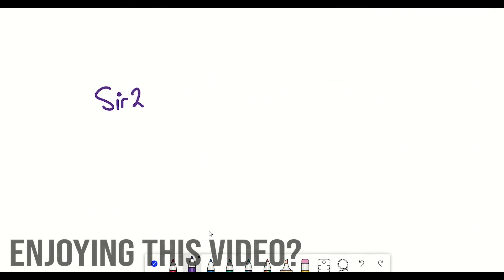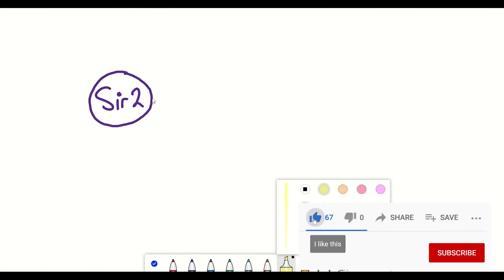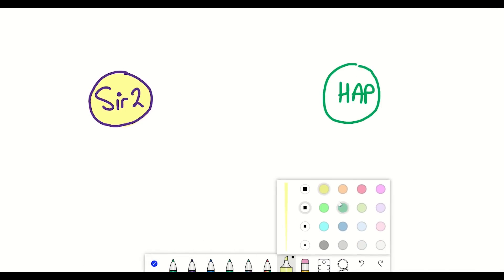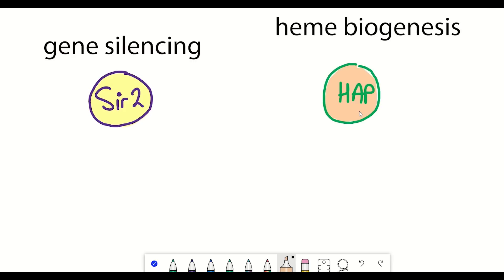Just appreciate that there are these two mechanisms and two key protein players involved in their regulation: SIR2 that controls gene silencing and HAP4 that controls the heme production.